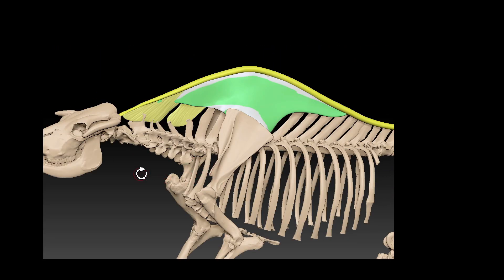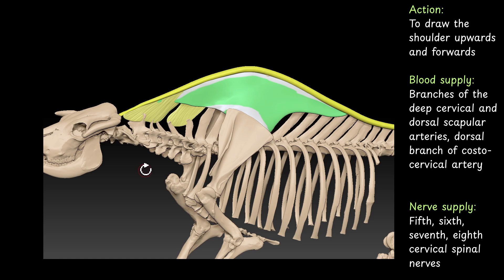Action: to draw the shoulder upward and forward. Blood supply: branches of deep cervical and dorsal scapular arteries, dorsal branch of costocervical artery. Nerve supply: fifth, sixth, seventh, eighth cervical spinal nerves. In the angiology and neurology chapters we will discuss in detail the course of the blood vessels and nerve supply.